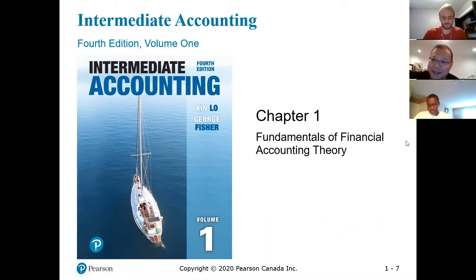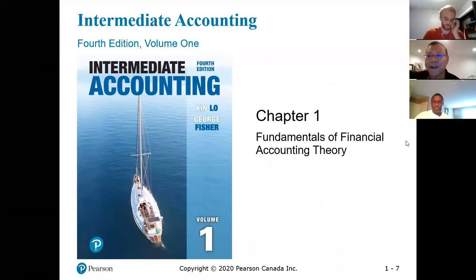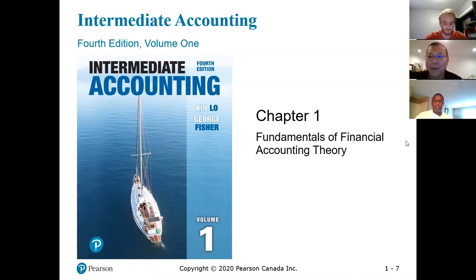You'll find that the first three chapters are mostly theory — mostly conceptual stuff. Maybe you can call it the fluffy stuff. You won't see journal entries until chapter four. For those of you who like making journal entries, I promise we are going to do journal entries for chapters four to ten. But for the first three chapters, it's going to be mostly theory and concepts, and this is very important — it's going to help you understand why we do things in a certain way.